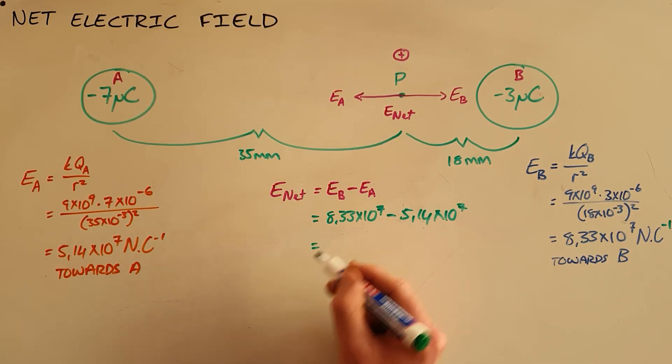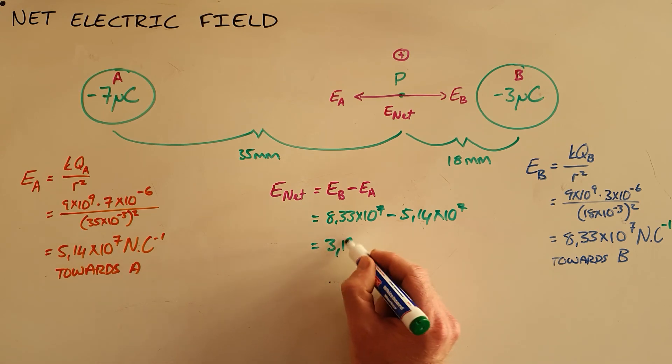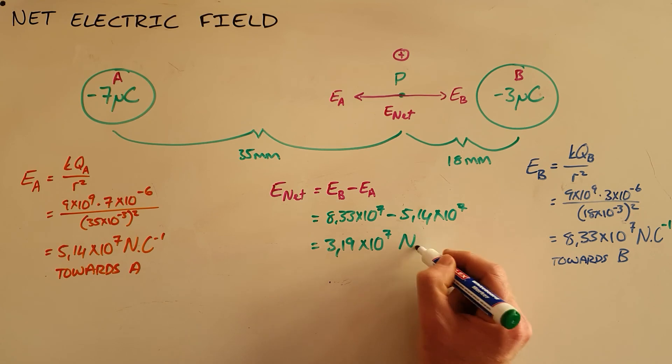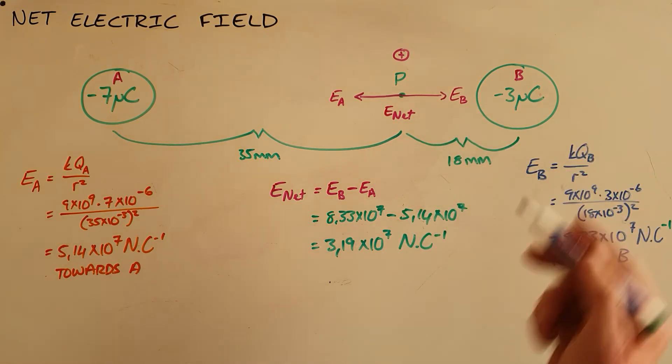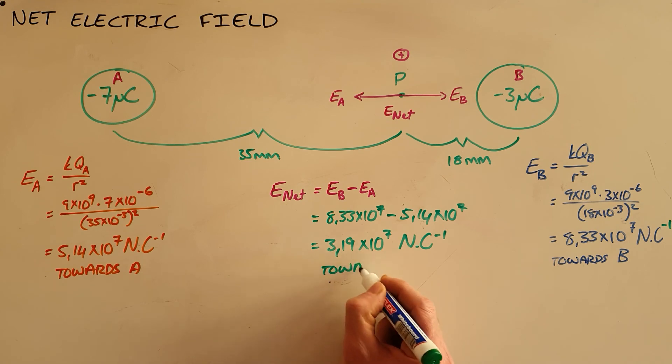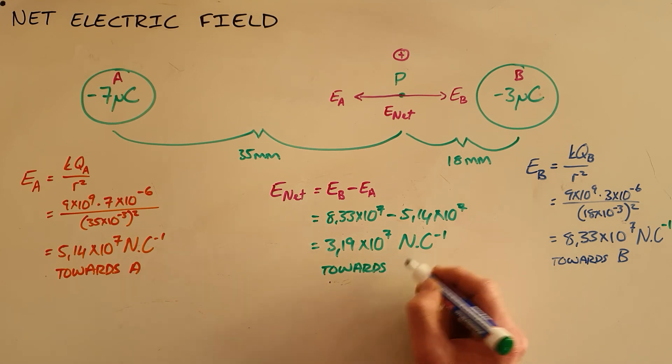Which gives us a net electric field of 3.19 times 10 to the 7 newtons per coulomb, and as we can see this is towards the right, or more accurately towards charge B.